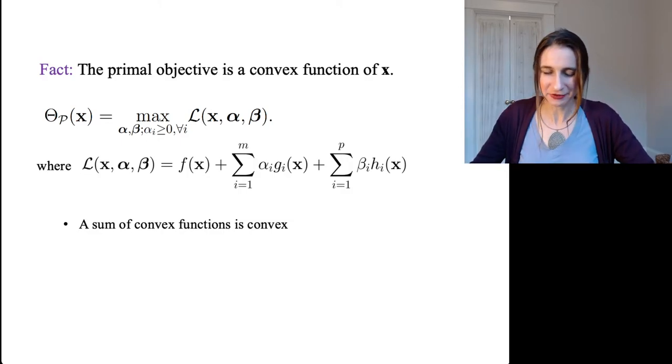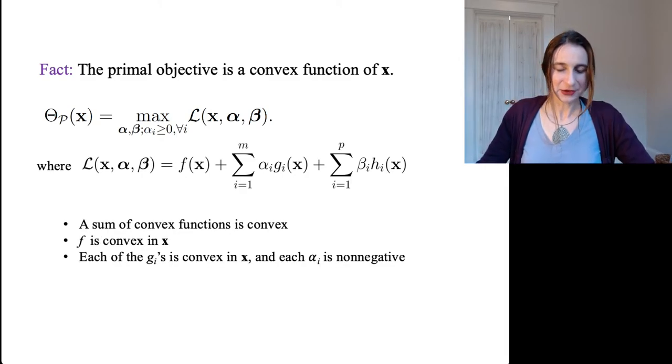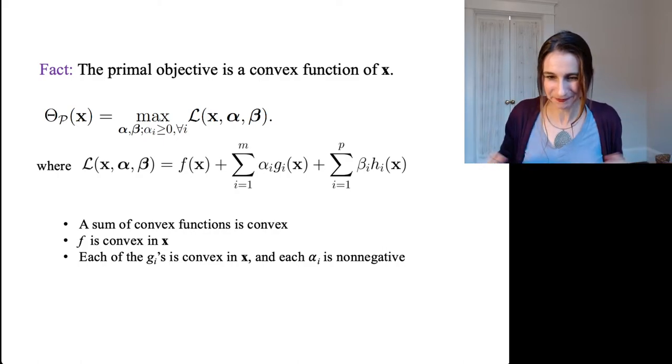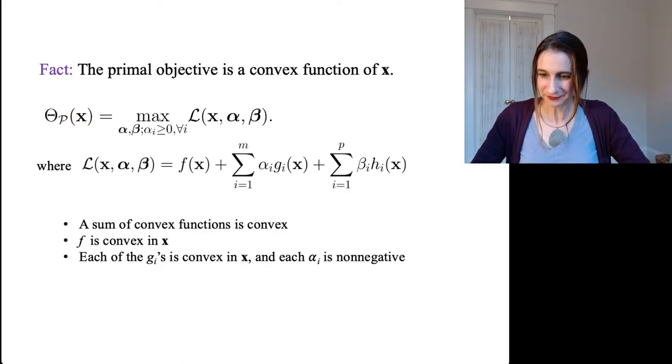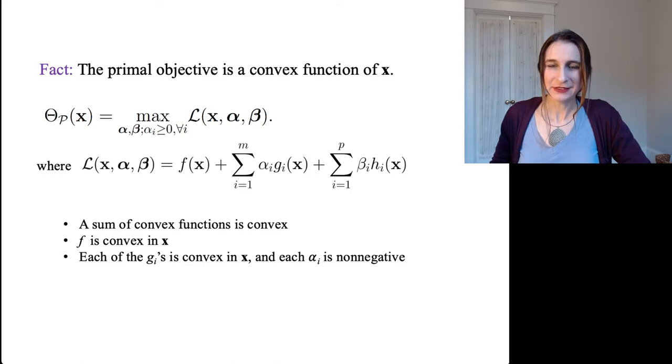Okay, so let's start with f(x). I already know f of x is convex. We assume that, that's part of the problem. Okay, now each of the g_i's is convex in x. Again, we got that from the problem, the original problem. However, we also know that the alphas are non-negative. If the alphas were negative we would be in big trouble because